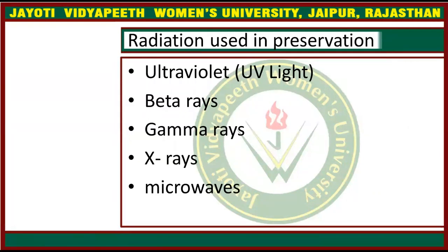Now, radiation used in preservation. We have talked about low and high types. Now we will talk about particular rays — which radiation rays are used. The first is ultraviolet (UV light), second is beta rays, third is gamma rays, fourth is x-rays, and the fifth one is micro rays. So these are the most common rays which are used.